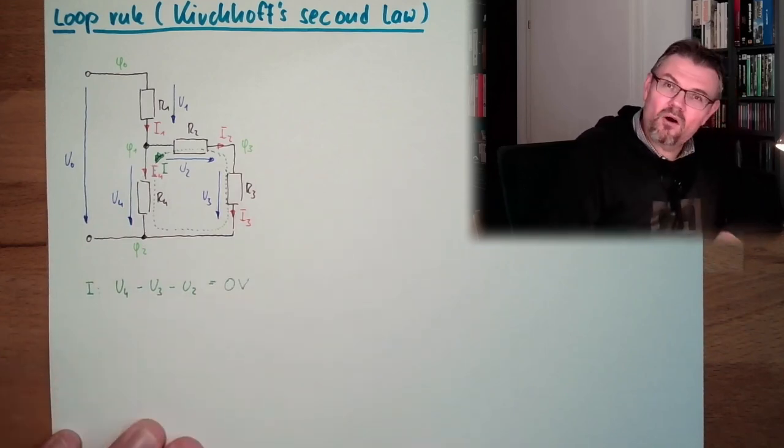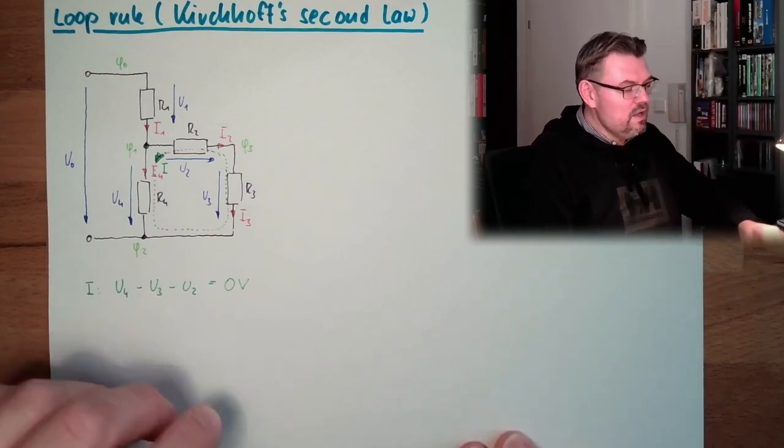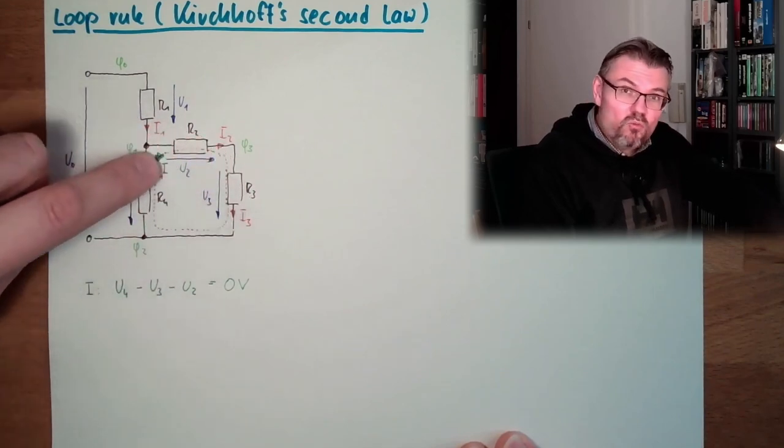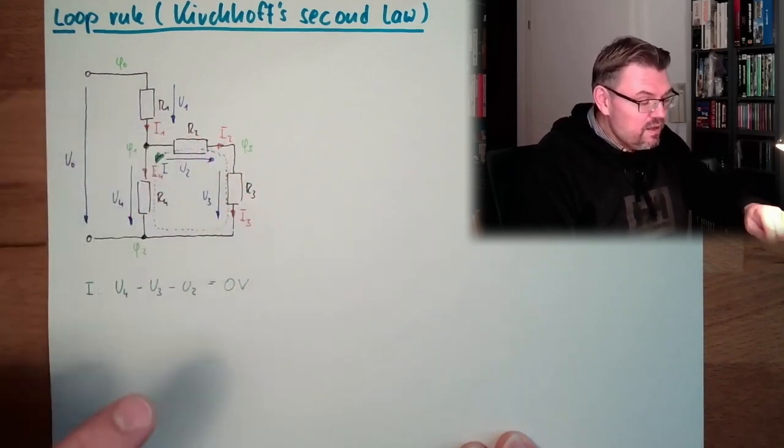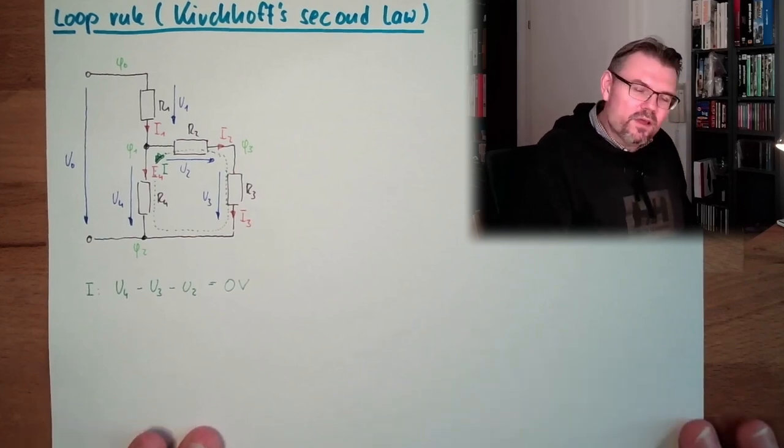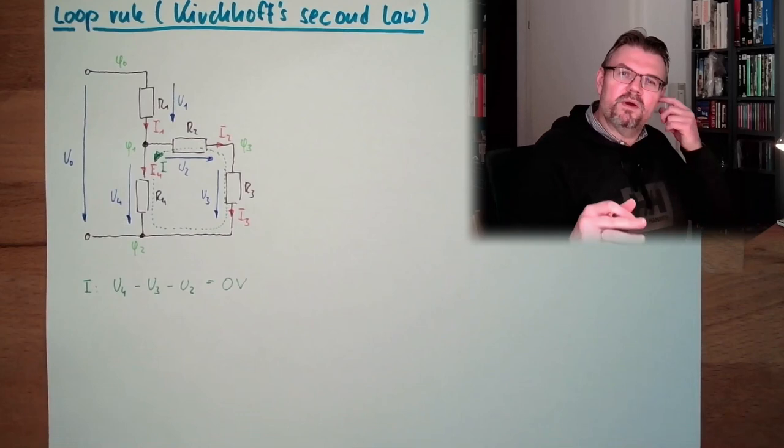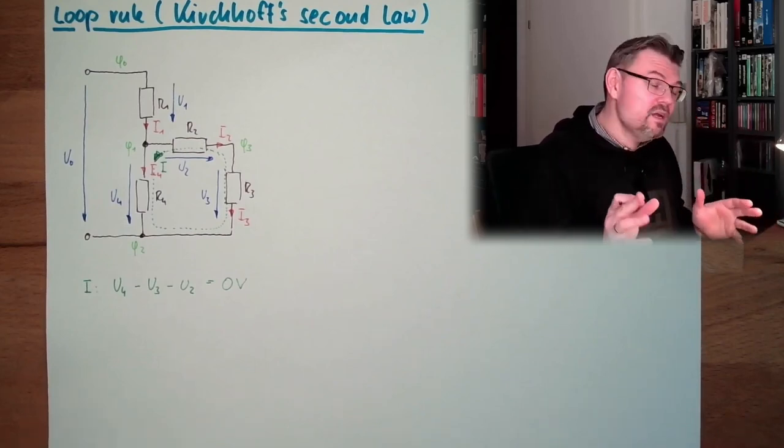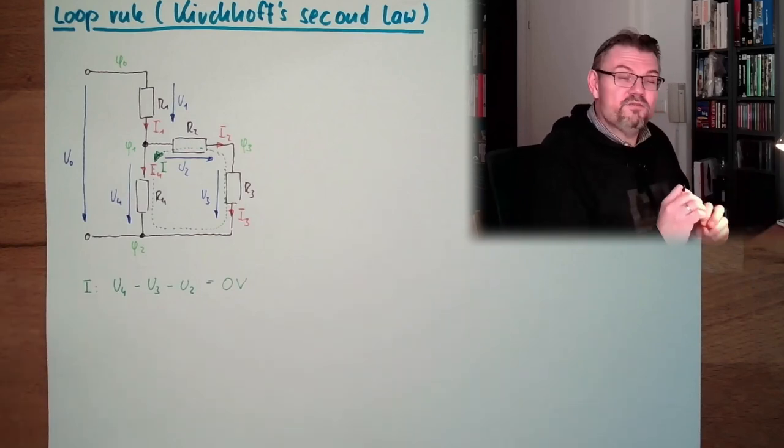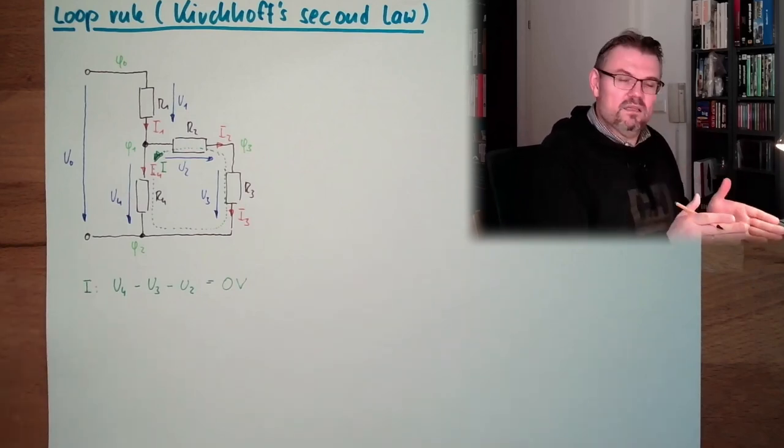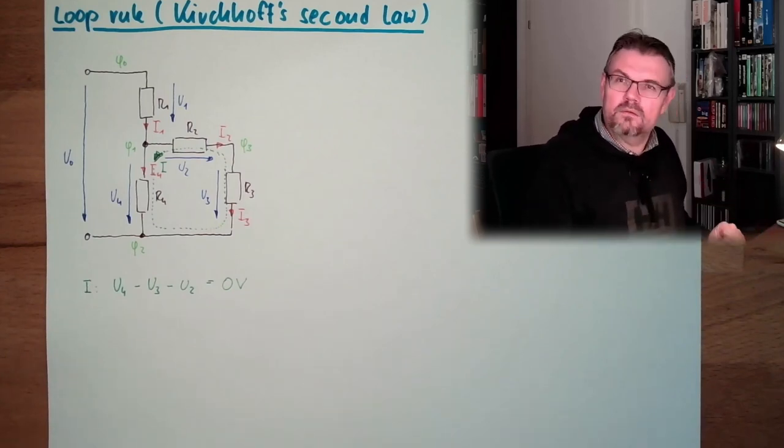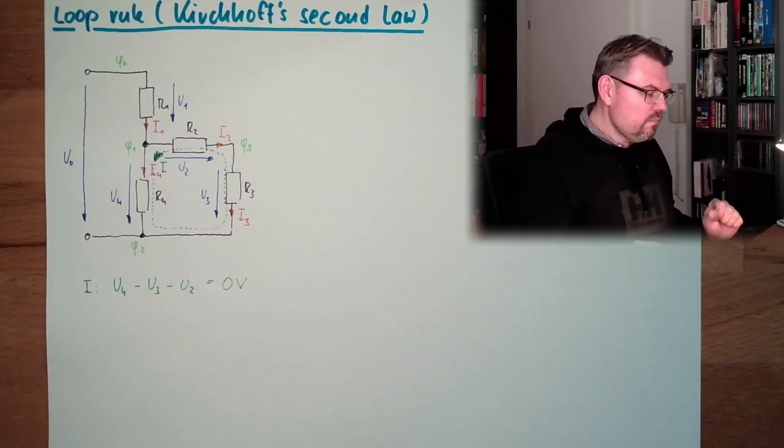That's already the law, that's already Kirchhoff's second law, the loop rule, that if you summarize all voltages in a closed loop inside a circuit there must be zero volts. This is not working all the time because if we have changing magnetic fields we'll talk about this, we would have induction and then it looks a little bit different. But in the case where we don't have changing magnetic fields, this is exact and this is the case now.